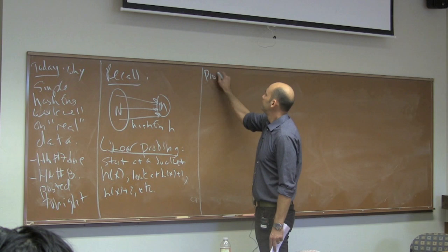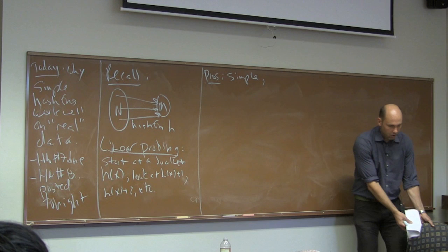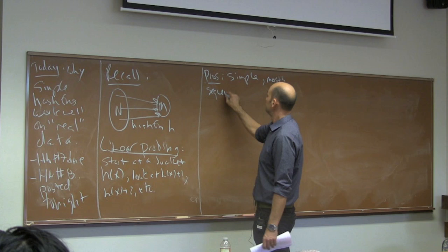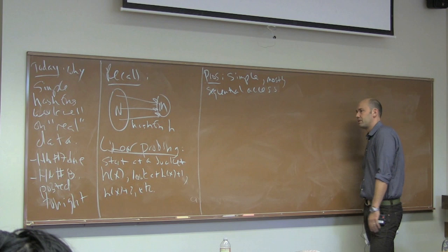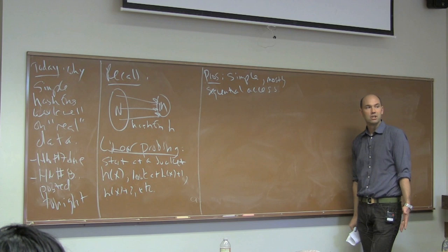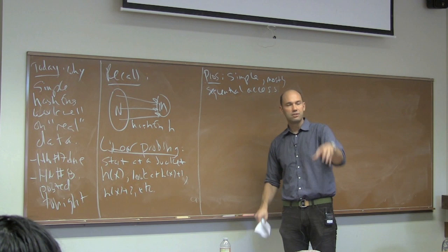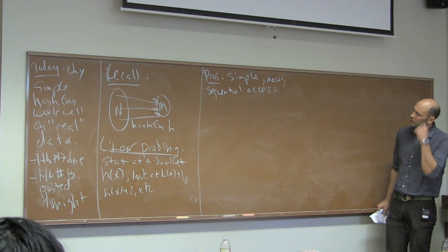Why do or why not do linear probing? It's obviously simple. The main reason it's useful in practice beyond simplicity is that it primarily involves sequential accesses to memory, as opposed to random accesses. Thinking about a hash table stored contiguously as an array, this interacts well with the memory hierarchy and with things like prefetching. So empirically you often get quite good performance from linear probing, and it is fairly common in practice. Contrast that with chaining, where a linked list can be hard to keep contiguous in memory, causing jumping around as you follow pointers. Similarly, more clever probing strategies that jump around would involve lots of random accesses.